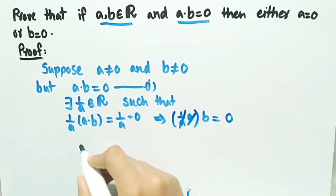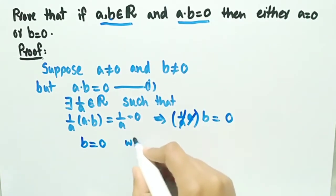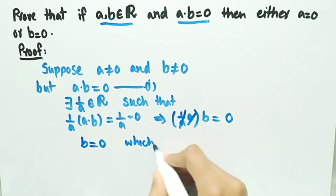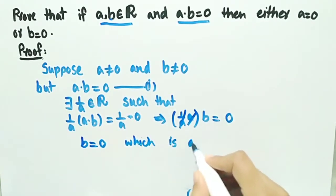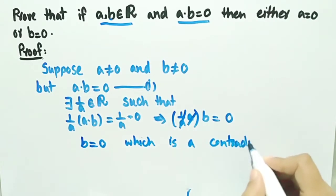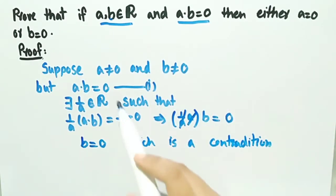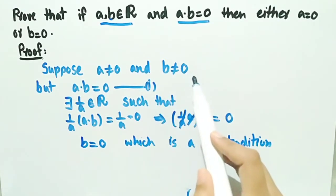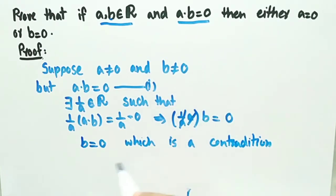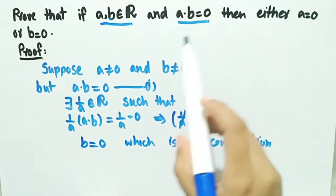This a is cancelled out by its multiplicative inverse (1/a), and we are left with b = 0, which is a contradiction. We had supposed in the beginning that both a and b are non-zero, but in the end we got that b = 0.